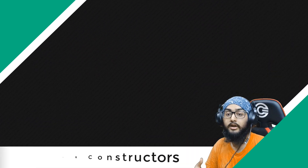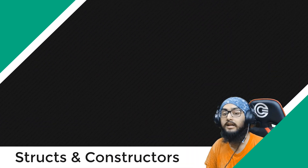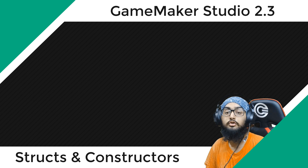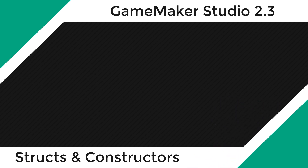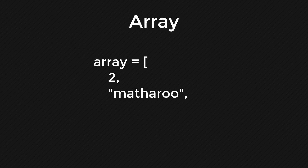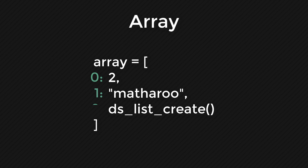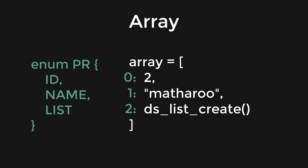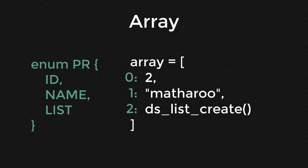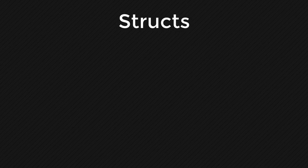In this video we'll be looking at structs and constructors in GameMaker Studio 2.3. In GML, if you want to create a group of variables you can use an array — you enter values into that array and they're numbered from zero. When you want to read those values you have to remember the numbers or use an enum, but now in GMS 2.3 this is made easier with structs.